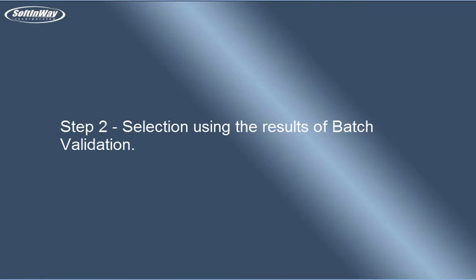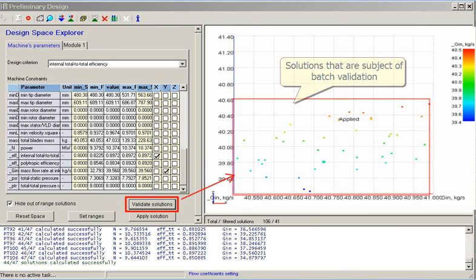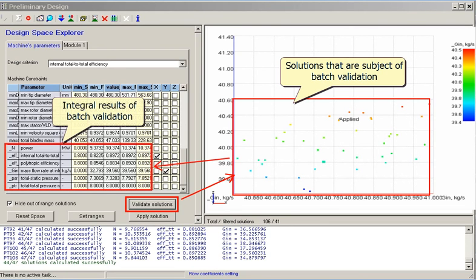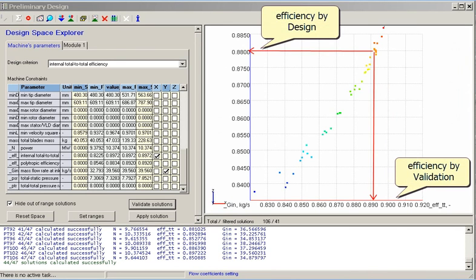Step 2: Selection using the results of batch validation. The batch validation option runs the direct solver with design point boundary conditions for all active solutions in the design space. Integral results are included in the design space explorer table and can be assigned to design space axes to compare with design results. Batch validation allows the designer to localize the most promising solutions, define design parameters with critical influence, and adjust the ranges of design parameter variation. An estimation of tolerance in mass flow rate shows that the difference for properly filtered solutions can be quite low, and a comparison of efficiency calculated within preliminary design and validation shows that results are well correlated.